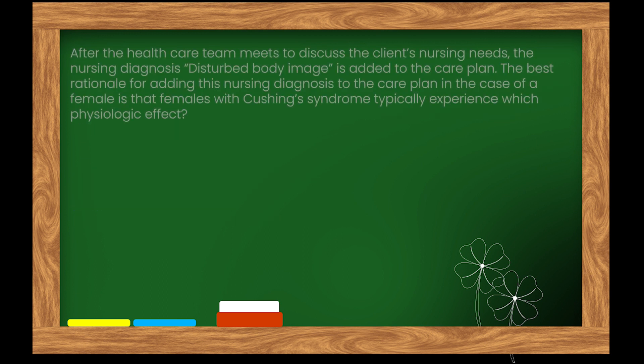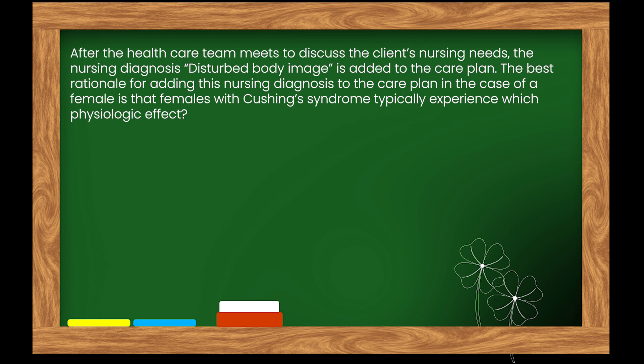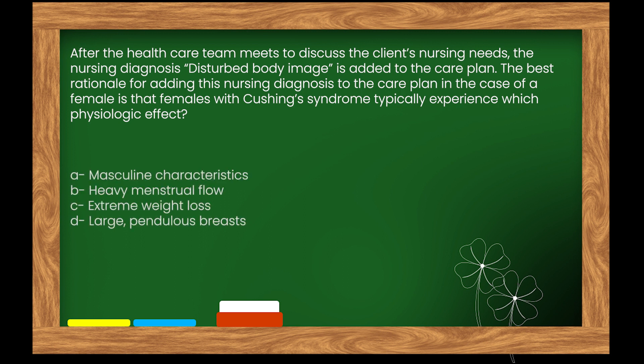Here is our next question. After the health care team meets to discuss the client's nursing needs, the nursing diagnosis disturbed body image is added to the care plan. The best rationale for adding this diagnosis in the case of a female is that females with Cushing's syndrome typically experience which physiologic effect? Options: A. Masculine characteristics. B. Heavy menstrual flow. C. Extreme weight loss. D. Large, pendulous breasts.